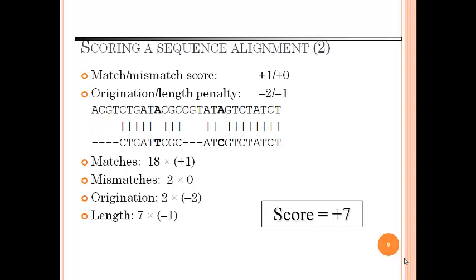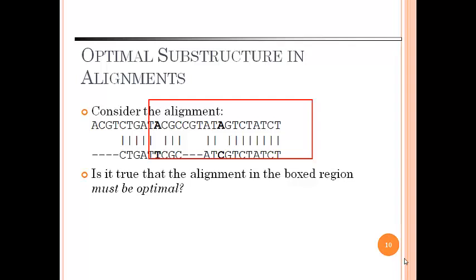This is again a sequence alignment scoring example number 2. Now optimal substructure in alignment. Consider the following alignment. Is it true that alignment in the box region must be optimal?